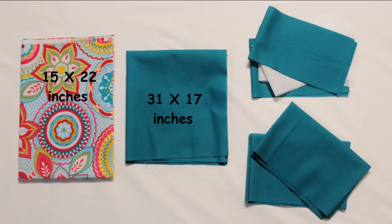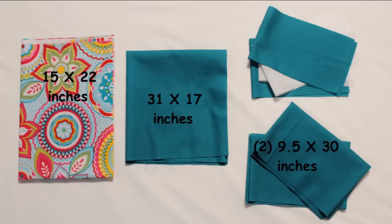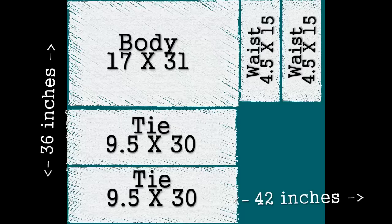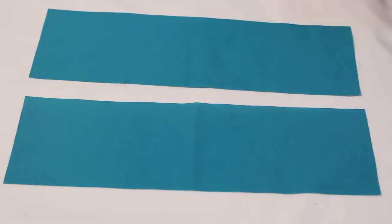You will need to cut a 15 by 22 inch piece from the printed fabric, a 31 by 17 inch piece, two 9 and a half by 30 inch pieces, and two 4 and a half by 15 inch pieces from the solid, and two 4 and a half by 15 inch pieces from the fusible interfacing. If you cut all the solid pieces as shown, you can get them to fit perfectly on one yard of fabric.